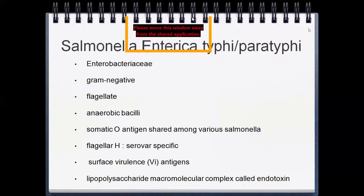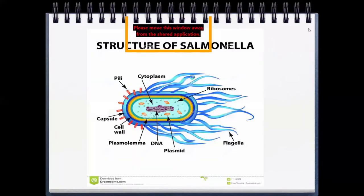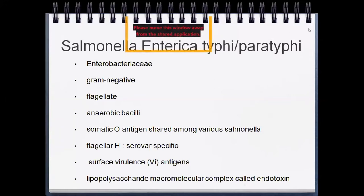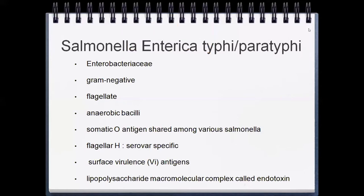Salmonella enterica is an Enterobacteria — gram negative, flagellated, facultative anaerobic bacilli. There are three antigens: O antigen (somatic), H antigen (flagellar, serovar-specific), and Vi antigen (surface virulent antigen). There is also a lipopolysaccharide macromolecule complex called endotoxin within the bacteria.